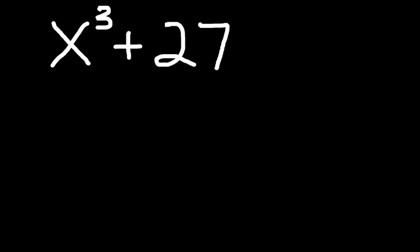If you'll notice in this example, we have two perfect cubes. We have x cubed, which is x times x times x, and we have 27, which is 3 times 3 times 3.